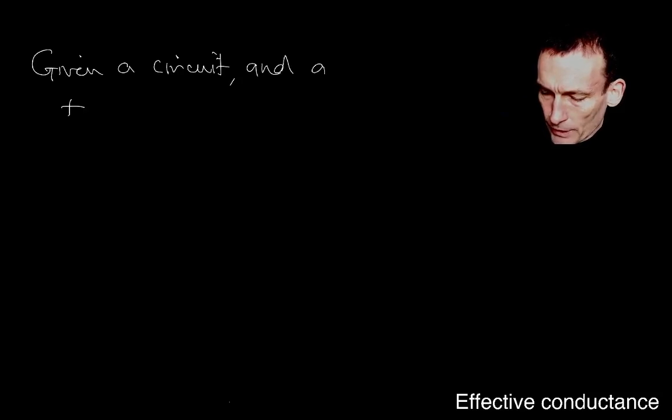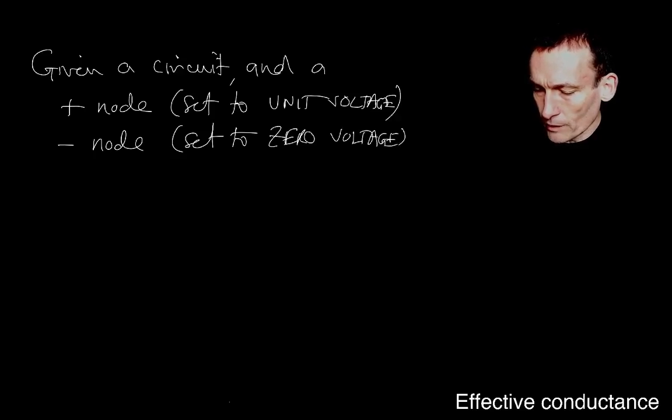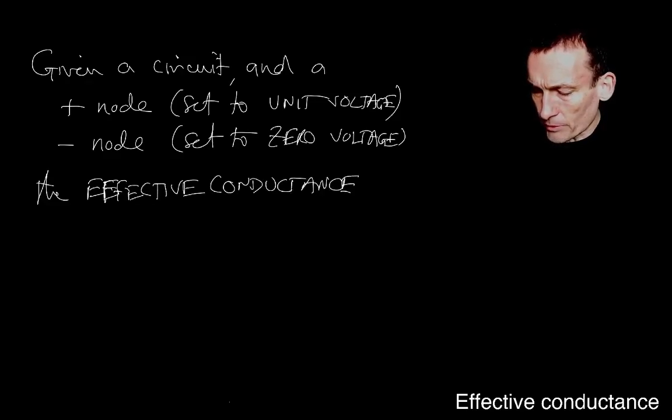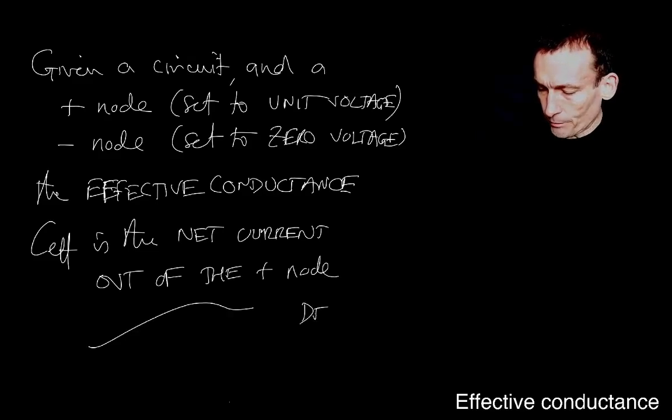I can define, so given a circuit and a plus node set to unit voltage and a minus node set to zero voltage or grounded, if you like, the effective conductance. This is what I'm defining. Effective conductance. I like to use, I don't know why, it just seems natural. CF is the net current out of the plus node. That's, if you like, a definition, a definition of the effective conductance.